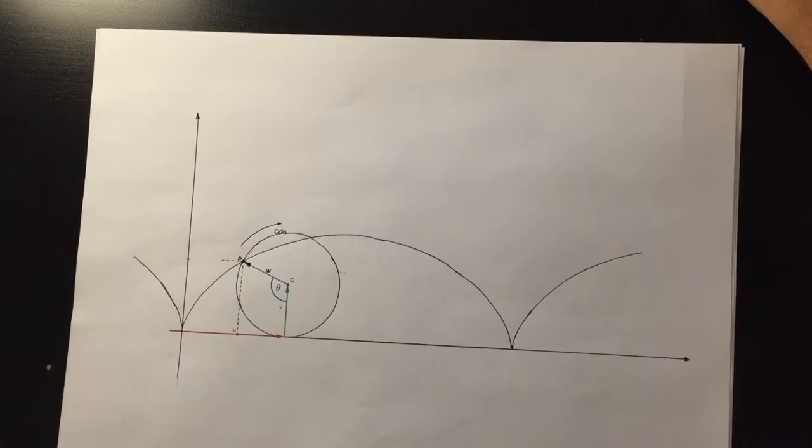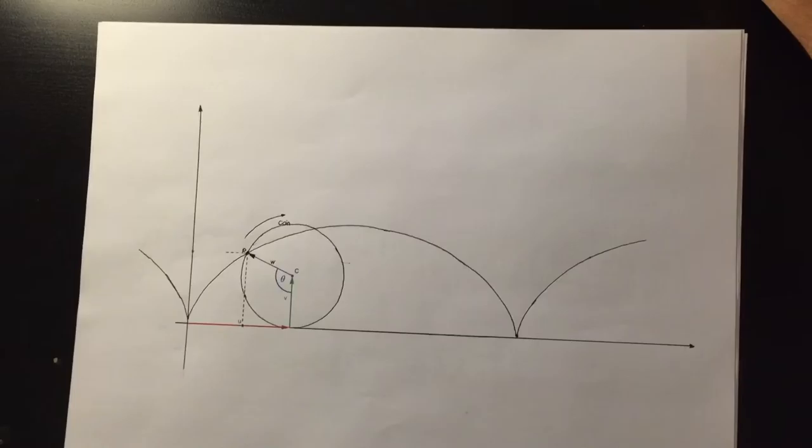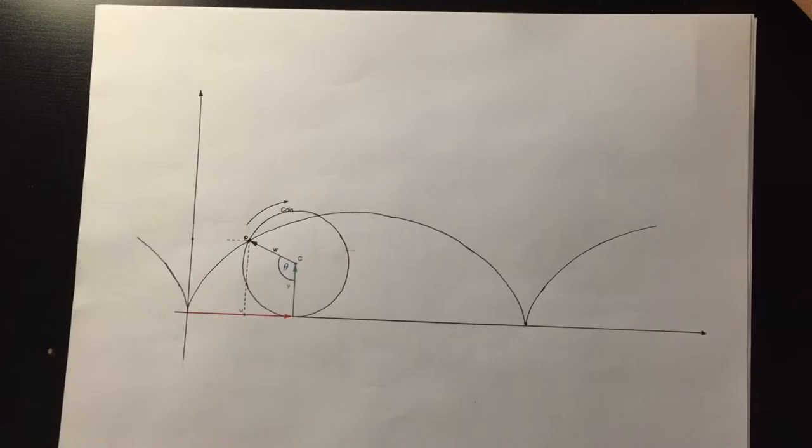Vector v is always the same, meaning that it has the same magnitude, this being the radius, and the same direction, being vertical. Therefore, vector v is equal to the radius times vector j.